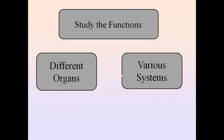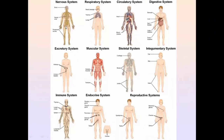In physiology, we also study the functions of various systems, as different organs combine together to form various systems. For example, the brain together with other organs forms the nervous system. There is also the respiratory system, circulatory system, digestive system, muscular system, skeletal system, integumentary system, immune system, endocrine system, and reproductive system. We study how each individual system performs its normal functions to sustain normal human life.